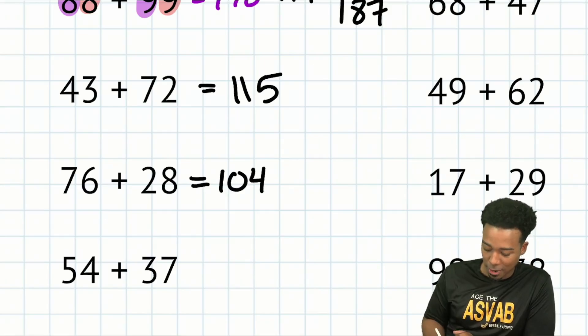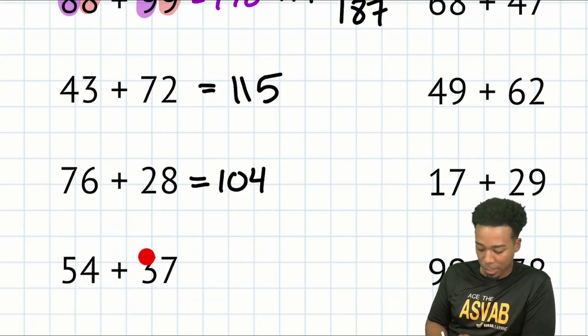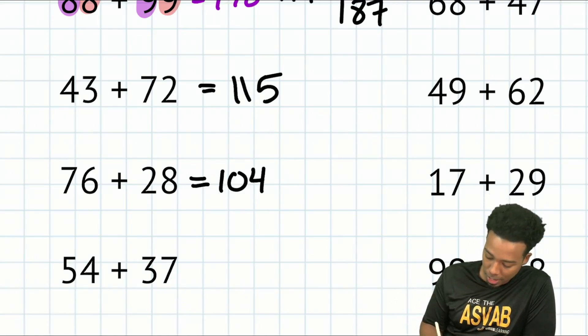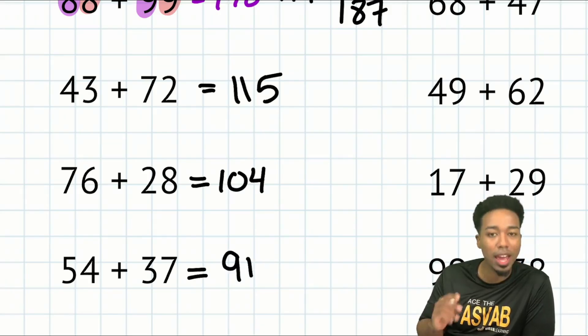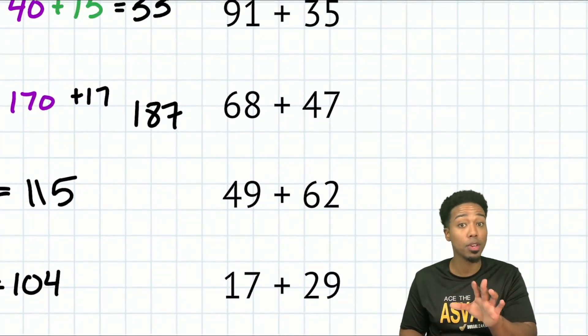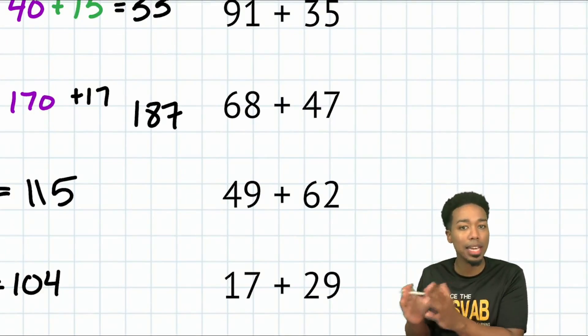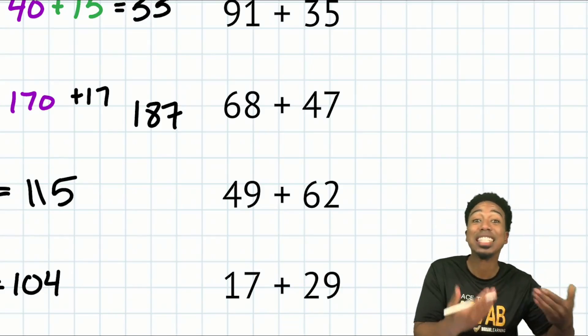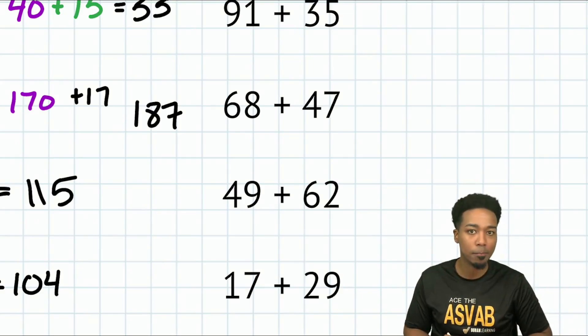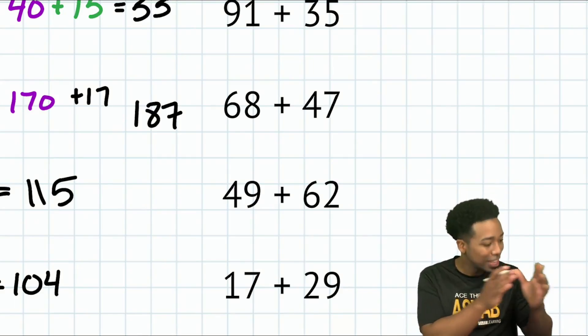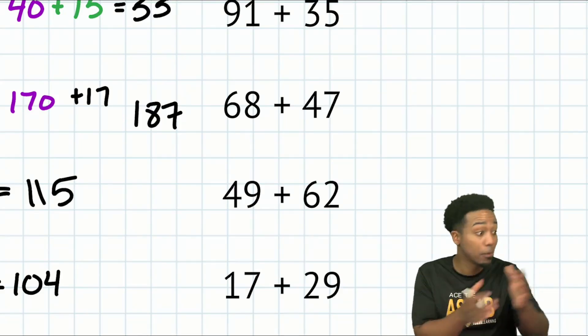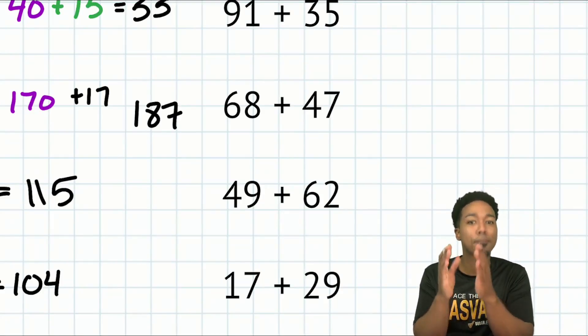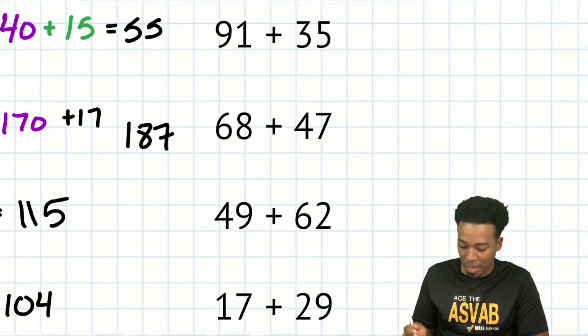That's up next. We have 54 plus 37. I can say 50 plus 30 is 80. 4 plus 7 is 11. 80 plus 11 is 91. Again, you can do this in your head. You can essentially, and I'm being for real here, you can calculate this addition here faster than someone else can write it down to add by hand. You can actually become faster than someone who is writing it down. Like you're done before they finish writing down the problem. That's insane, but it's possible with the practice that you can do.